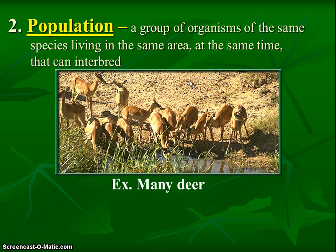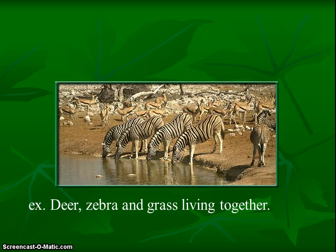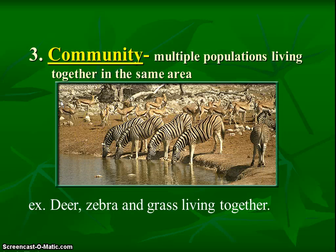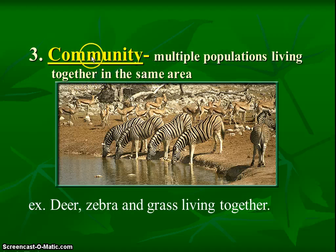Now we can zoom out even farther. Getting a little bigger than a population, now we don't just have deer — we can see gazelle in the background, we also have zebra, and different sorts of grasses living here. We call this a community. That's our third definition: community means multiple populations living together in the same area. No longer just deer — now we have another type of creature coming into the picture, maybe two or three types. But all the things in a community are living.